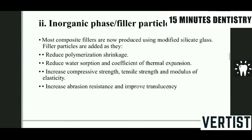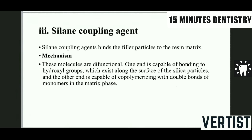The second is the inorganic phase — that is the filler particles. Composite fillers are now produced using modified silicate glass which is tougher than the base material of the composite. They reduce polymerization shrinkage, water sorption, and offer the other advantages we have already seen about filler particles. They are generally made up of silica glass. Third is the silane coupling agent. They bind the filler particle to the resin matrix — they are the binders. They have two arms: one arm binds to the matrix and another arm binds to the filler particles. These silane coupling agents play an important role — if the silane coupling is weak, the bond between the filler and resin matrix will also be weak and you will get irregular surfaces.